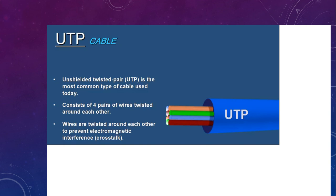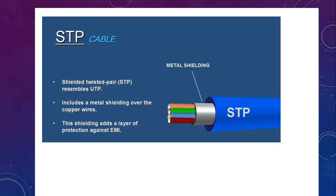For cables, the first type we have is UTP, which stands for Unshielded Twisted Pair. It is the most common type of cable used today. It consists of four pairs of wires twisted around each other. The wires are twisted to prevent electromagnetic interference.